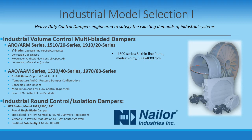Each series of damper comes in either V-blade or airfoil blade, with blade action both parallel and opposed. Parallel-bladed dampers have their blades oriented to open and close at the same time, same angle, and same direction, and are generally used for full-open or full-closed operation with the best control of airflow near their fully closed or fully open positions. Common applications of parallel-bladed dampers are gas turbines, scrubbers, fan inlets, and oxidizers, where on-off operation is at a premium.